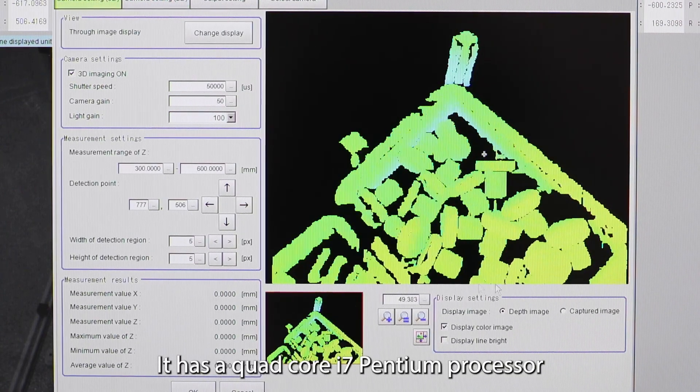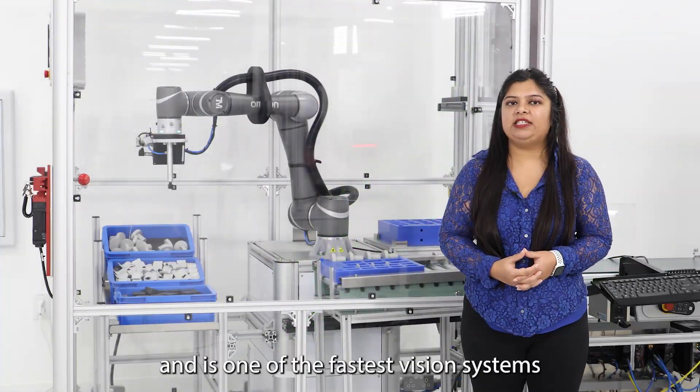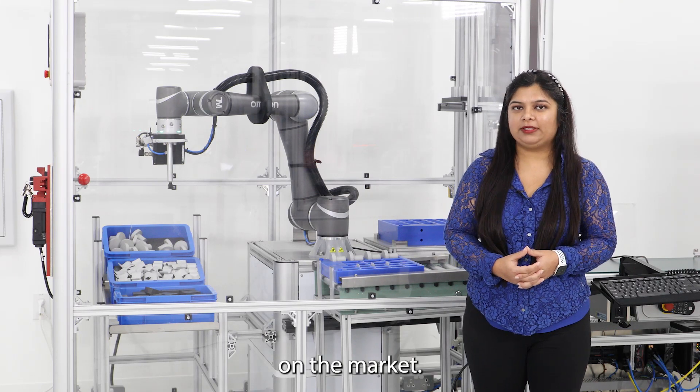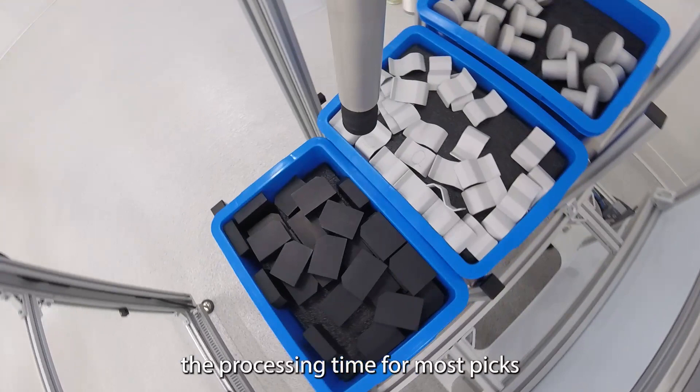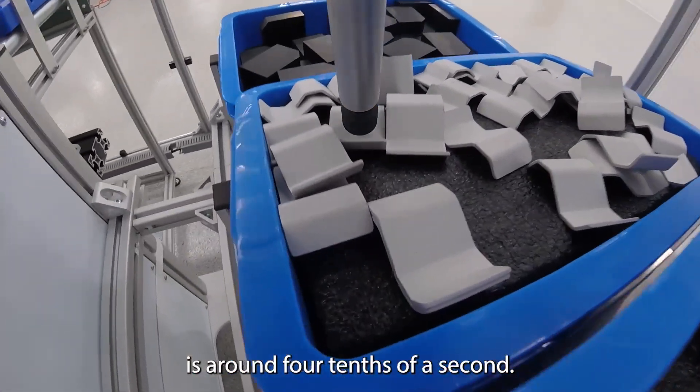It has a quad-core i7 Pentium processor and is one of the fastest vision systems on the market. With Omron's active one-shot technology, the processing time for most picks is around 4 tenths of a second.